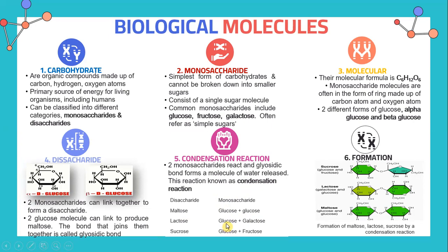A glucose molecule linked with galactose produces lactose. Glucose linked with fructose produces sucrose. The bond that joins them together is called a glycosidic bond. These are examples of glycosidic bonds shown in chemical diagrams — the formation of maltose, sucrose, and lactose via condensation reaction.